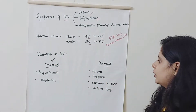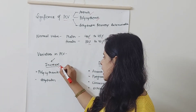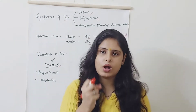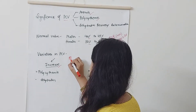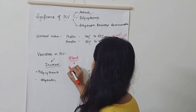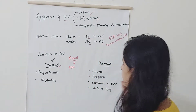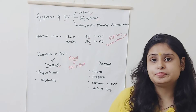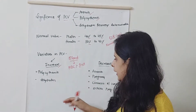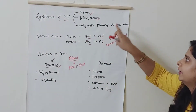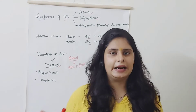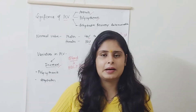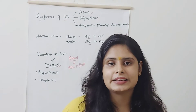Now, let's discuss variations in PCV. If PCV is increased, that means polycythemia — the fluid inside the blood is less and RBCs are relatively more. Essentially, plasma is reduced and formed elements like RBCs and WBCs are proportionally higher. This is why in dehydration conditions, PCV increases. We use PCV to monitor dehydration recovery — if a patient has severe dehydration, we keep checking their PCV during treatment to determine how much the body has rehydrated.